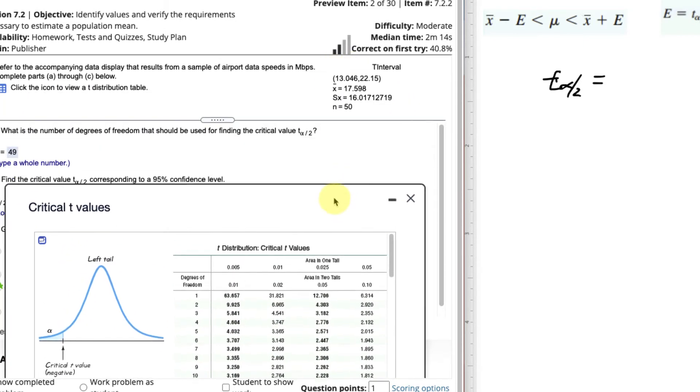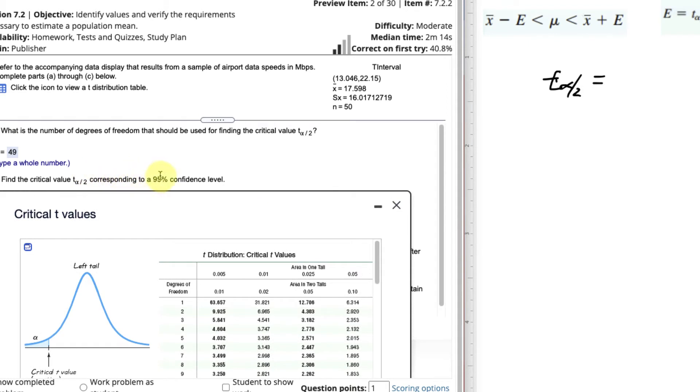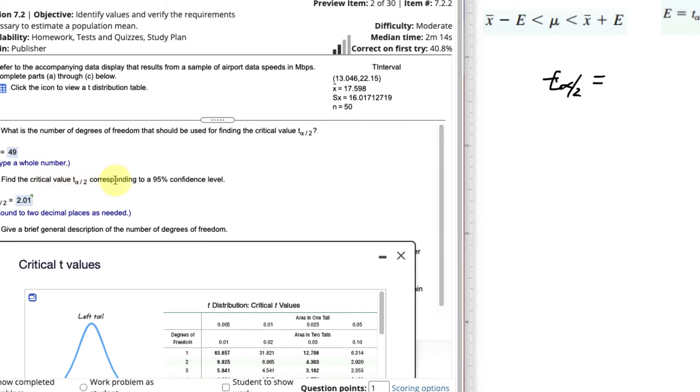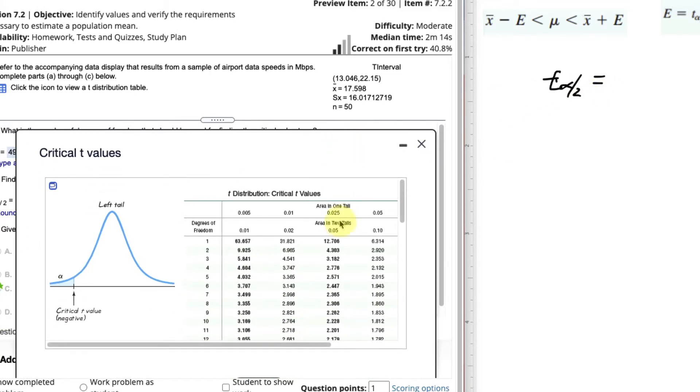What confidence interval are we using? Here it says in the directions, corresponding to a 95% confidence interval. So remember, this t sub alpha over 2 corresponds to the information to the right of that value. And that's going to be half, right? So half of the alpha value, so our alpha value is 5% here. For a 95% confidence interval, alpha is 5%. So alpha over 2 is 2.5% for a single tail.